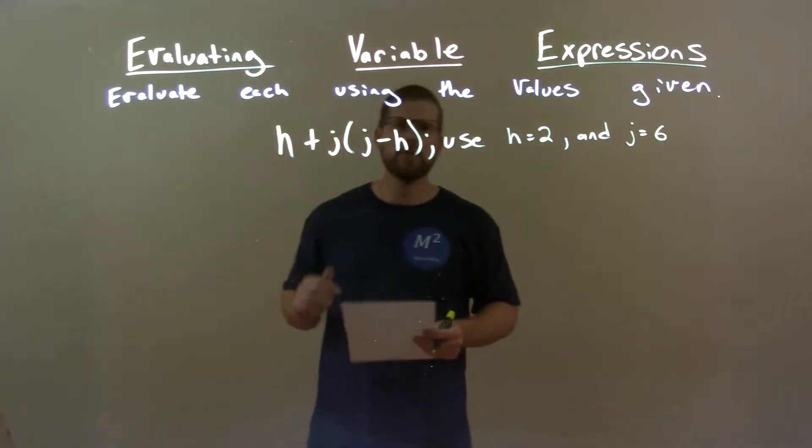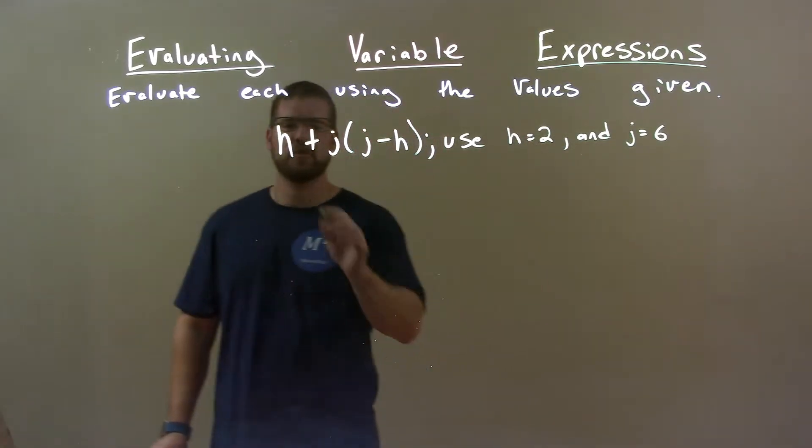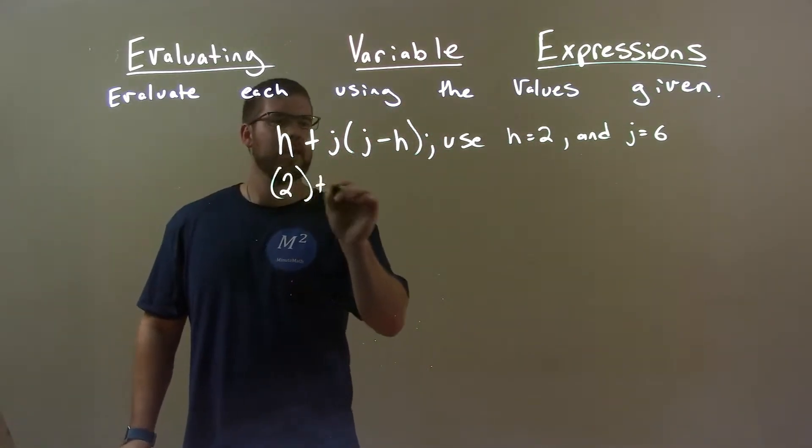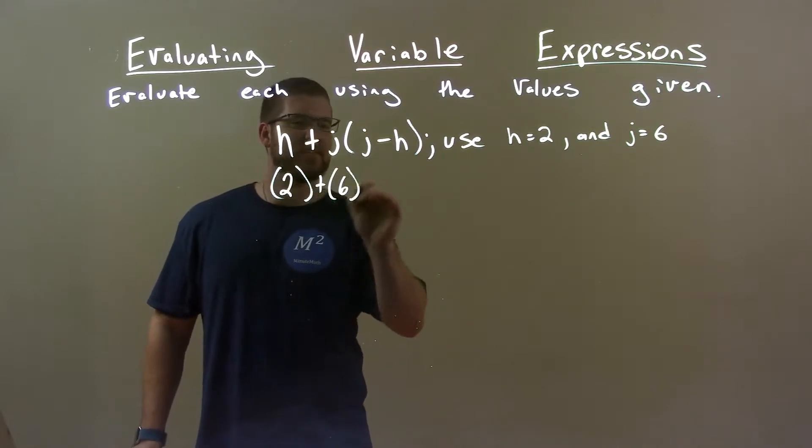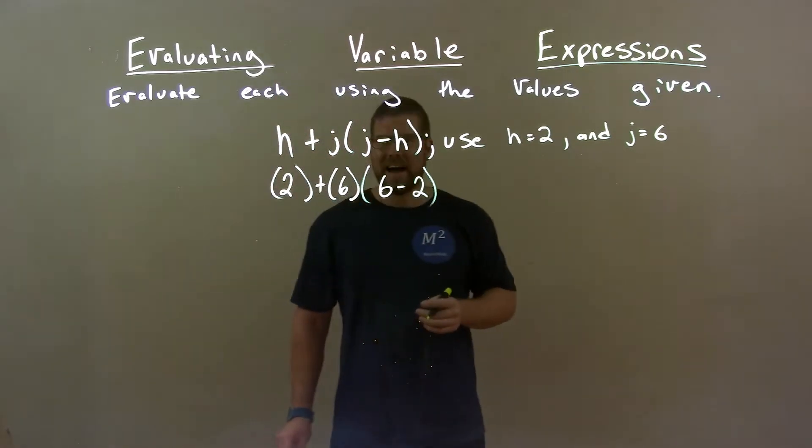Alright, first step: substitute our letters with their corresponding numbers. 2 for H and J is 6. So 6 here minus 2. Alright, there we got it.